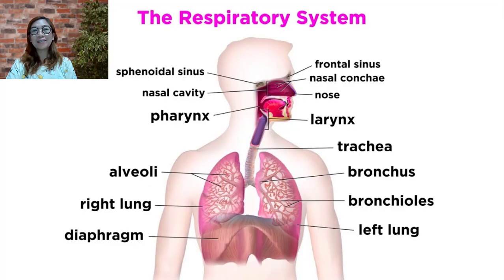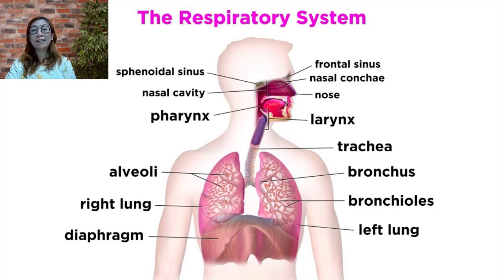When the respiratory system is mentioned, people generally think of breathing. But breathing is only one of the activities of the respiratory system. The body's cells need a continuous supply of oxygen for the metabolic processes that are necessary to maintain life. The respiratory system works with the circulatory system to provide oxygen and to remove the waste products of metabolism, and it also helps to regulate the pH of the blood.